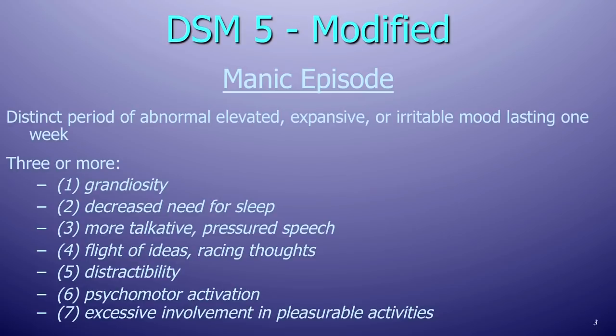You must have three or more of the associated criteria: typically people sleep less, talk more quickly with pressured speech, thinking becomes tangential jumping from topic to topic, thoughts are racing, highly distractible, psychomotor energy — moving around a lot — and excessive involvement in pleasurable activities. Underneath all of this, people feel expansively wonderful, grandiose, very special, and they don't think anything could go wrong. They don't worry about the consequences of what they might do because they just feel so wonderful.